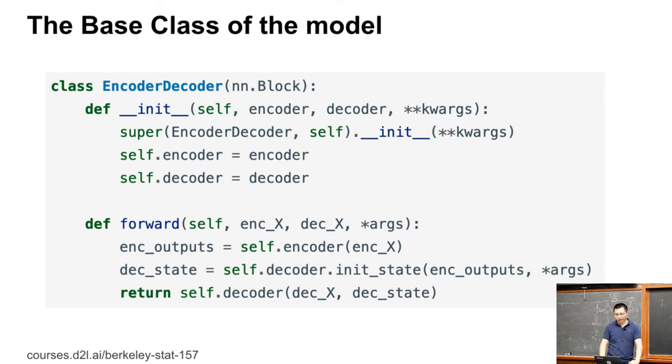So doing the forward pass, we first put the encoder input into the encoder, get the output, and using this output, feed it into the decoder init function, init_state function, and with additional arguments to get the decoder state.